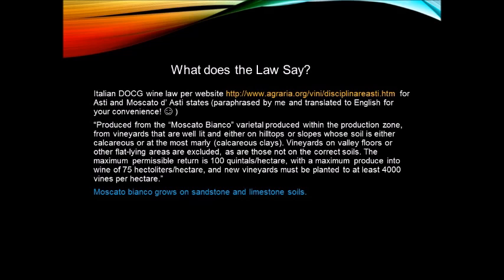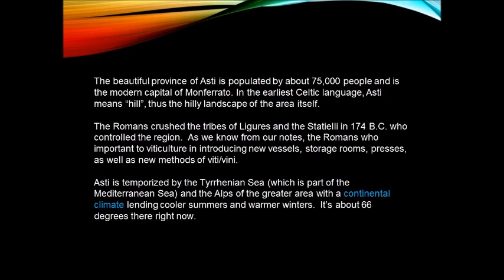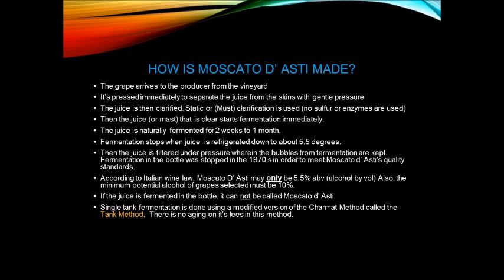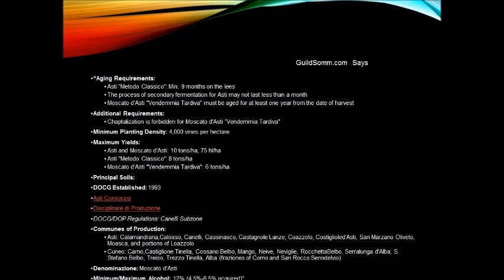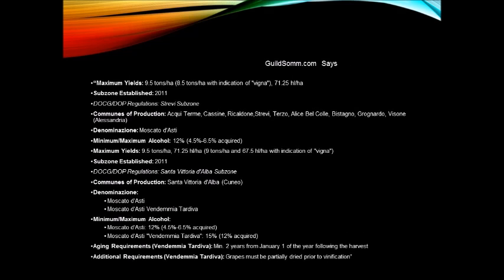Vernaccia di San Gimignano: first wine elevated to DOC. Made from the Vernaccia grape. Vin Santo: holy wine — a dessert wine made with Trebbiano and Malvasia by drying grapes on straw mats. Chestnut barrels may be used.